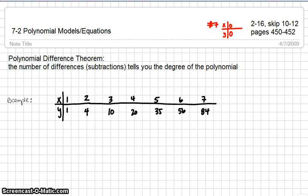This lesson is for FST lesson 7-2 on Polynomial Models and Equations. One quick note on the homework before you get started. Question number 7 in the homework has an error. The table should read x0, y0.